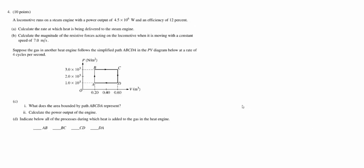All right, this is number four from the 2010 AP Physics B exam. It is a thermodynamics problem. We're dealing with a locomotive steam engine. We know the power output and we know its efficiency. Part A wants us to determine the rate at which heat is being delivered to the steam engine.